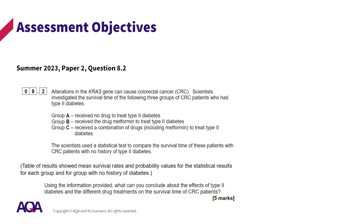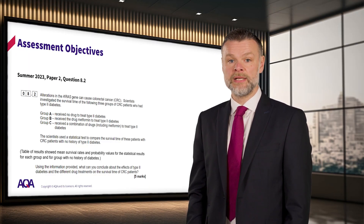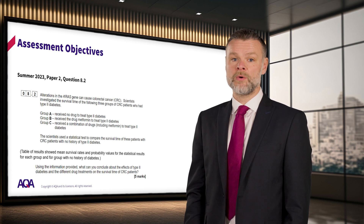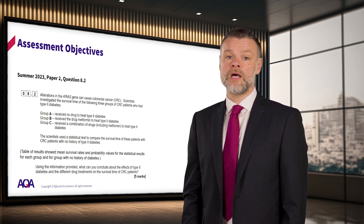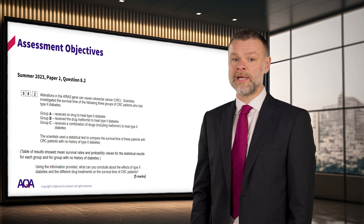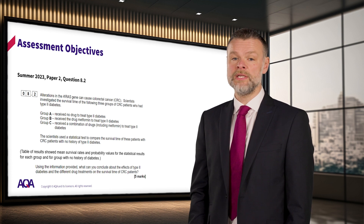And now, which assessment objective is being tested in this question? It's worth noting that in order to fit the question onto the slide, I have removed the table which accompanied this question. This is an AO3 question. The stem of some AO3 questions can be up to one page in length, providing detail and results of an investigation. If a stem is this long, it is normally followed by a question or questions that make up several marks and not just one or two marks in total. The results in questions can be provided in a variety of formats, but often this is in the form of a table or graph. AO3 questions are usually three to five marks in length.